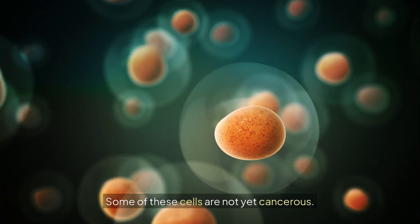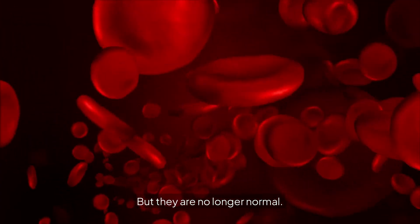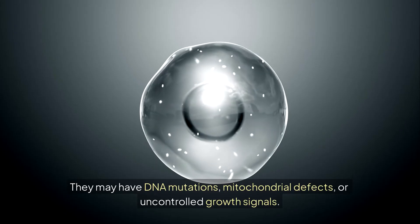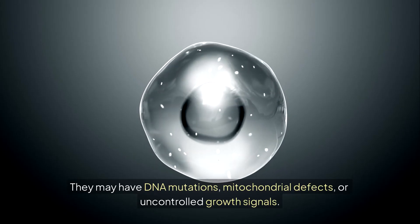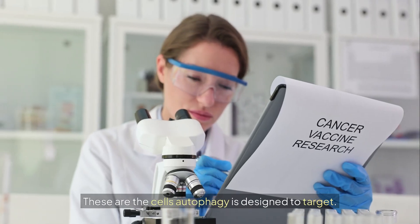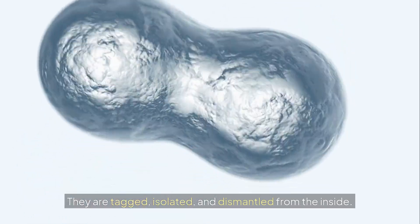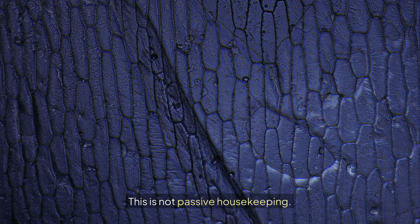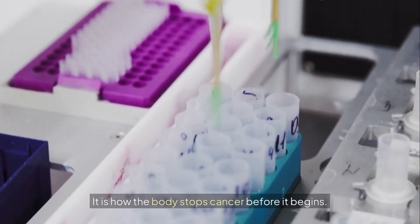Some of these cells are not yet cancerous. They have not formed tumors or spread, but they are no longer normal. They may have DNA mutations, mitochondrial defects or uncontrolled growth signals. These are the cells autophagy is designed to target. They are tagged, isolated and dismantled from the inside. This is not passive housekeeping. It is active defense. It is how the body stops cancer before it begins.